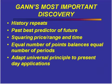With that, we're going to get to the highlight of the presentation today — Gann's most important discovery. He believed that history repeats itself, and the past is the best predictor of future moves. So I'm going to show you squaring of price and range and time. Basically, we take an equal number of points balancing an equal number of time periods.